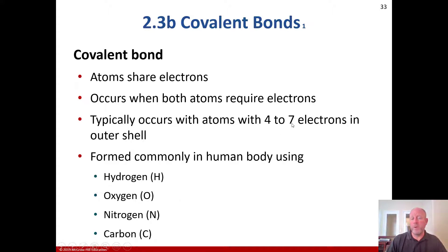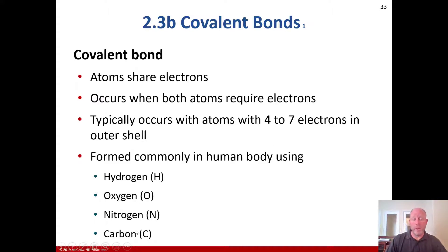Carbon already has four in its outer layer and is right in the middle, whereas oxygen and nitrogen are on the higher scale, basically trying to get to eight with only one or two more to go.